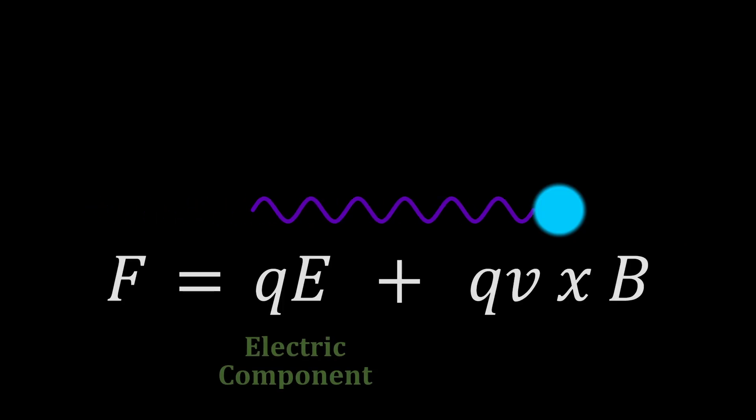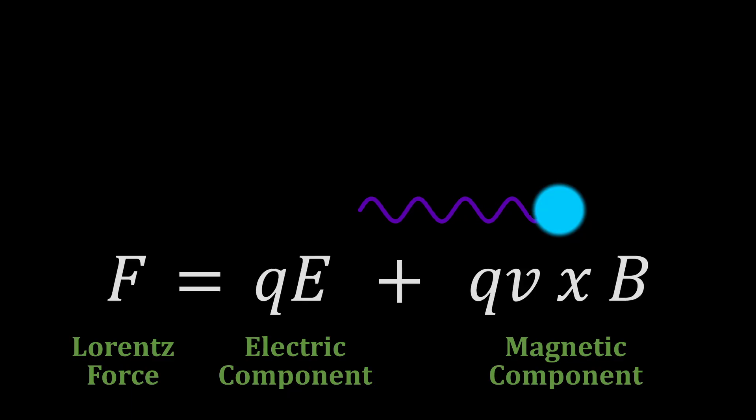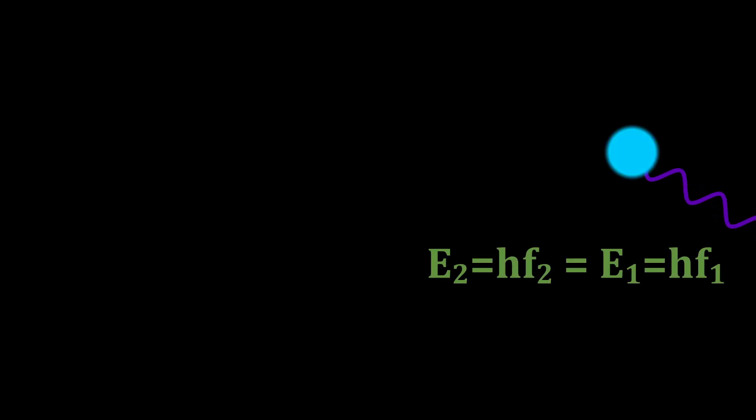Thomson scattering uses classical electromagnetism to explain interactions between light and electrons. According to this model, when light interacts with an electron, the electric and magnetic components of the light exert a Lorentz force on the electron. The electron absorbs the light, is set in motion, and as a consequence of acceleration, emits radiation at the same wavelength as the incident beam of light.